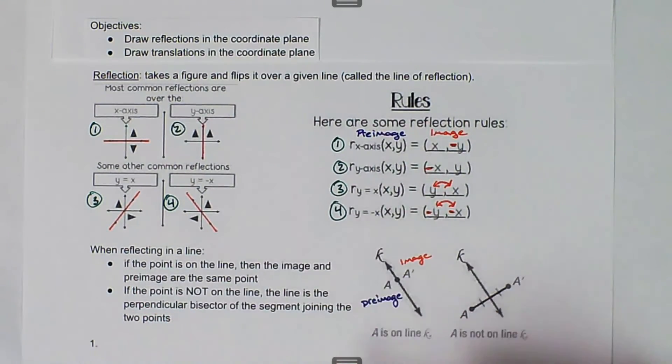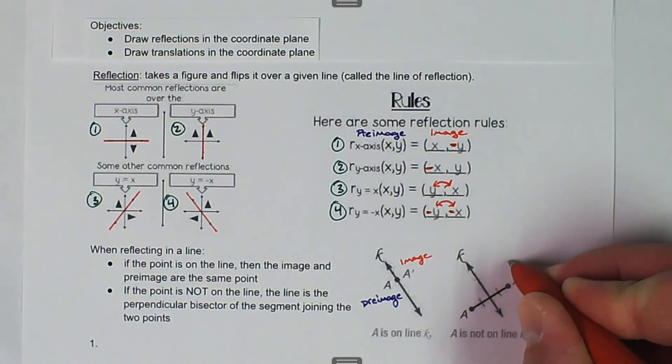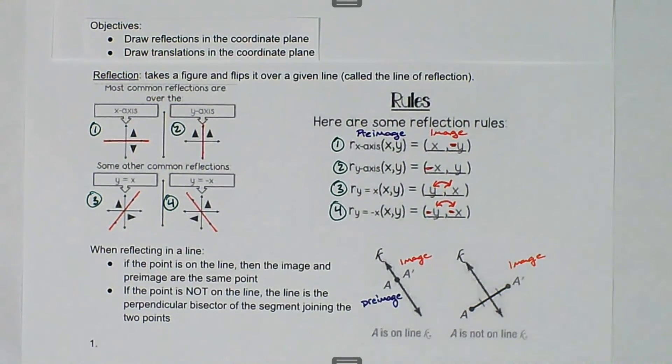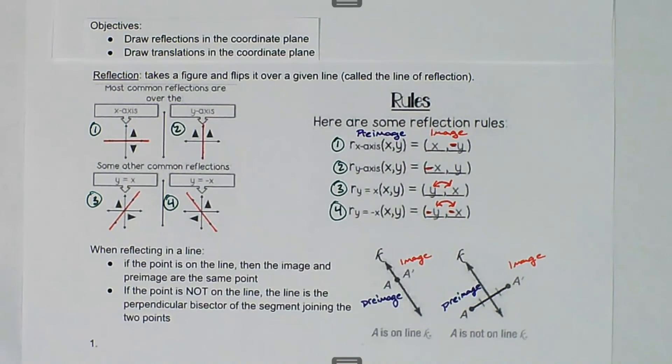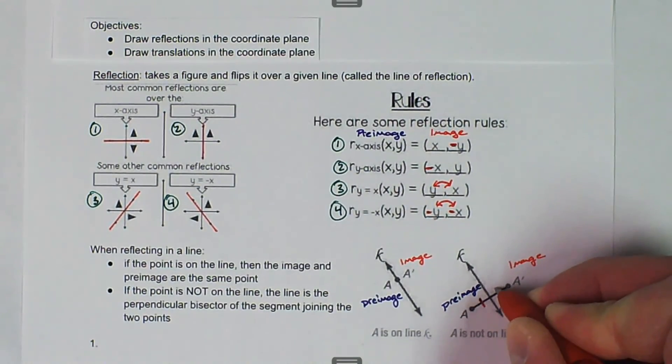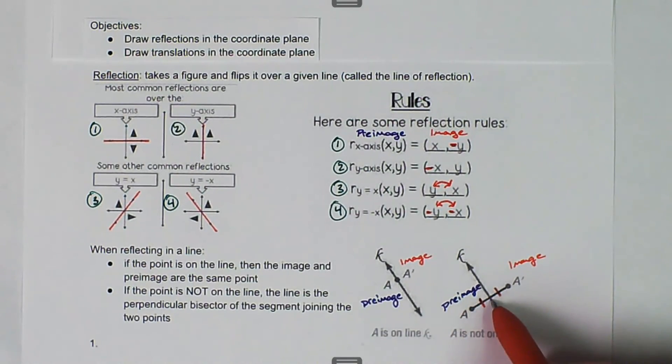This picture goes with our first bullet point here: if the point is not on the line, the line is the perpendicular bisector of the segment joining the two points. So again, we have the pre-image and the image. A prime is the image and A is the pre-image. It's the perpendicular bisector. We have the congruent marks here to show that the distance from A to the line and the distance from A prime to the line is the same. And this is also perpendicular, so that's 90 degrees right there.